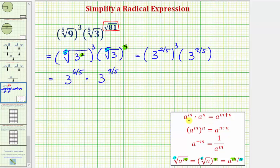And when multiplying and the bases are the same, we add the exponents, so this would be three raised to the power of six-fifths plus nine-fifths, which would be fifteen-fifths.